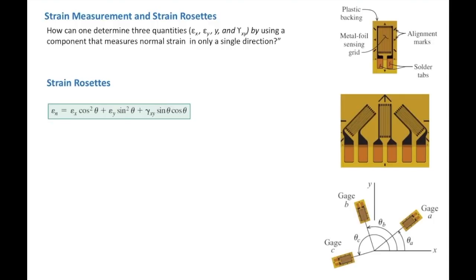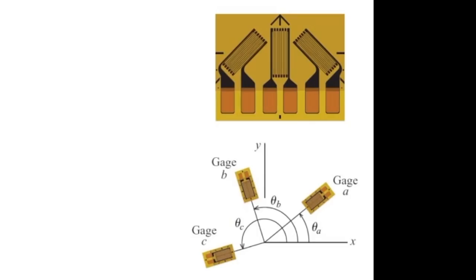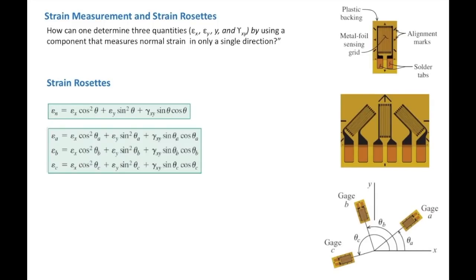That equation is shown here. For the strain transformation equation, I gave you two equivalent forms: the top one is usually used and is in terms of 2θ; the bottom one is more suitable for our analysis and is in terms of θ. Both equations give the same value. To determine εa, θ would be the angle of strain gauge a with the positive x-axis, so we use θa. Similarly, we can write εb and εc using the same equation, where the angle for each gauge is measured from the positive x-direction.